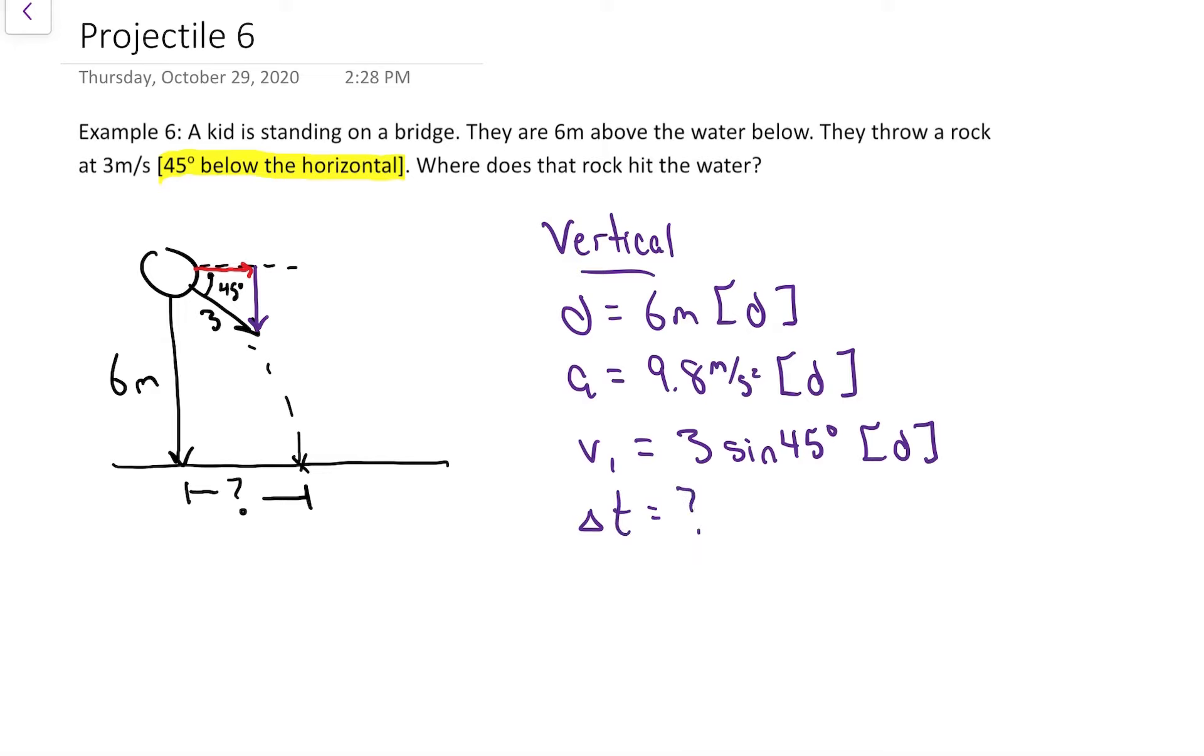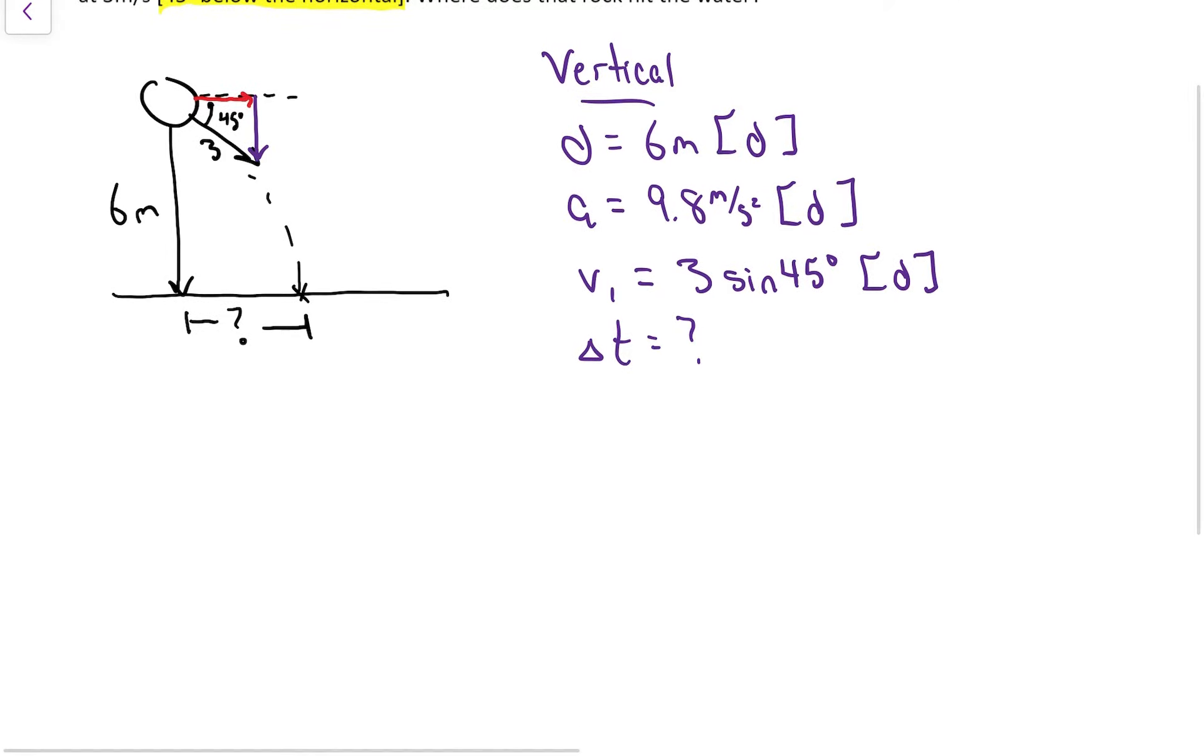Everything's downward so when I plug it into my equation I might as well make everything positive. If you went ahead and did everything negative just like the other questions it won't matter, we'll agree when we solve for time. But since everything's the same direction we might as well make life a little bit easier and call everything positive.